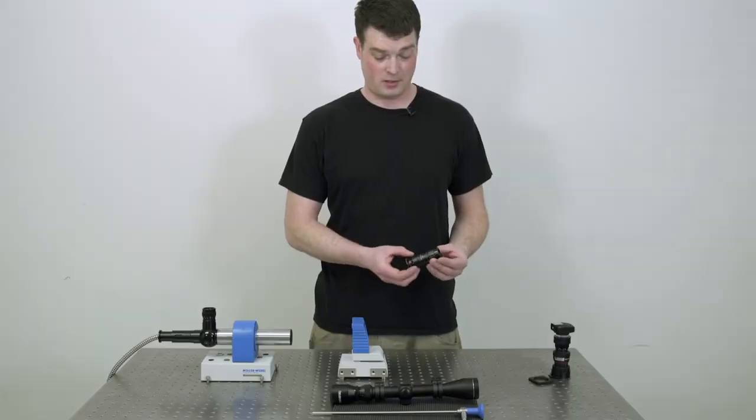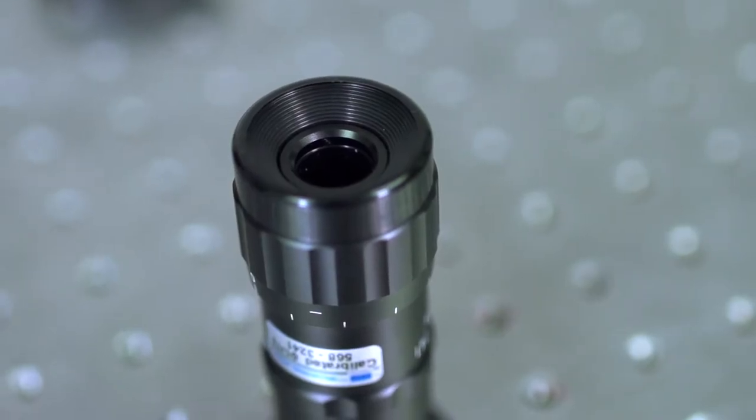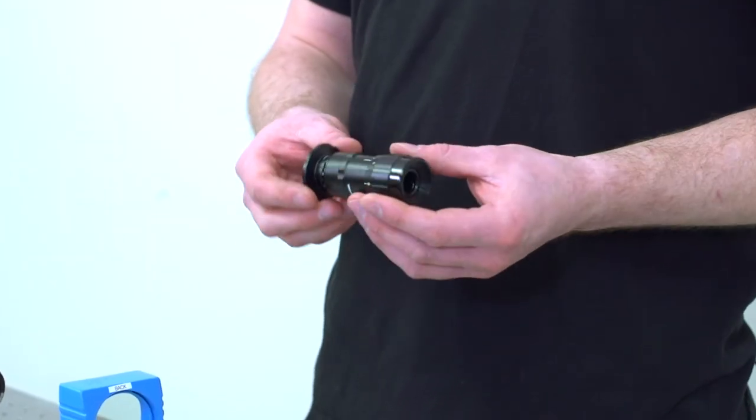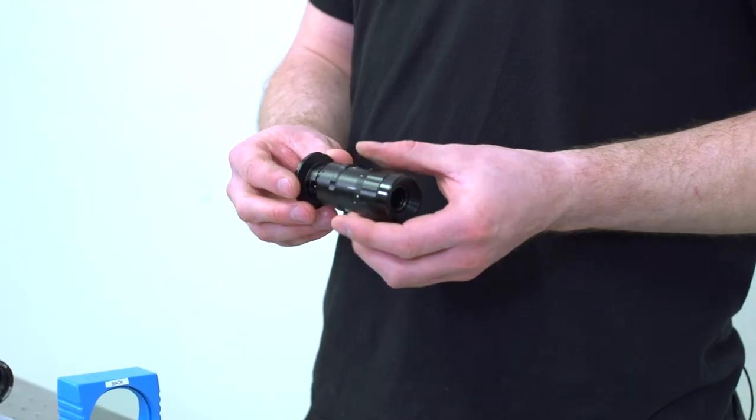This is a dynameter which is very similar to the dioptometer except that it measures exit pupil diameter and eye relief distance in millimeters.